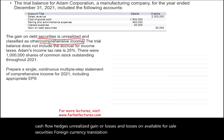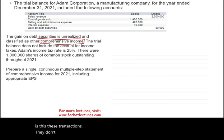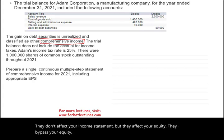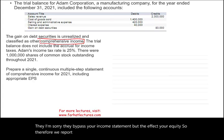These transactions don't affect your income statement, but they affect your equity. They bypass your income statement but affect your equity. So we report them as part of comprehensive income.